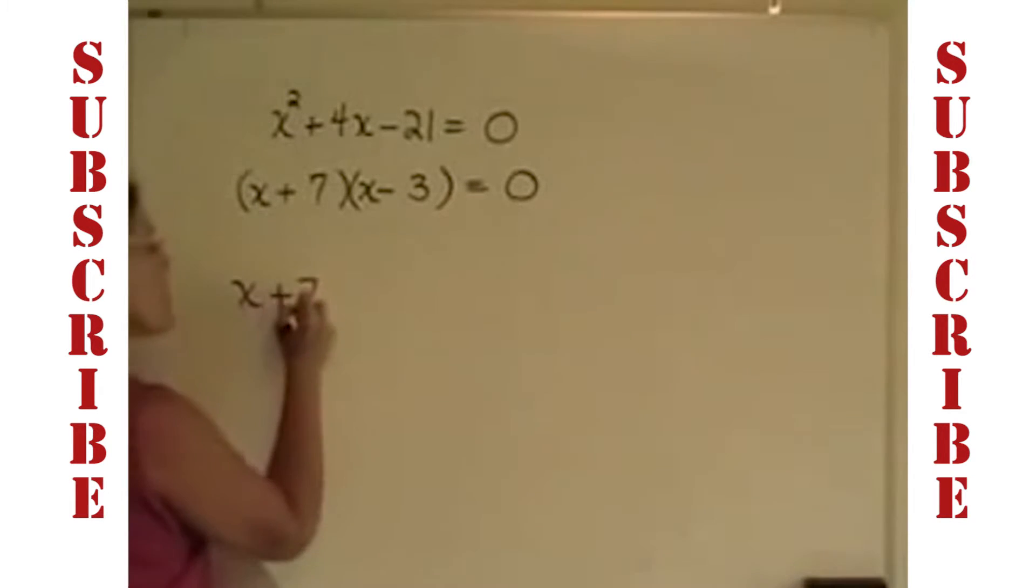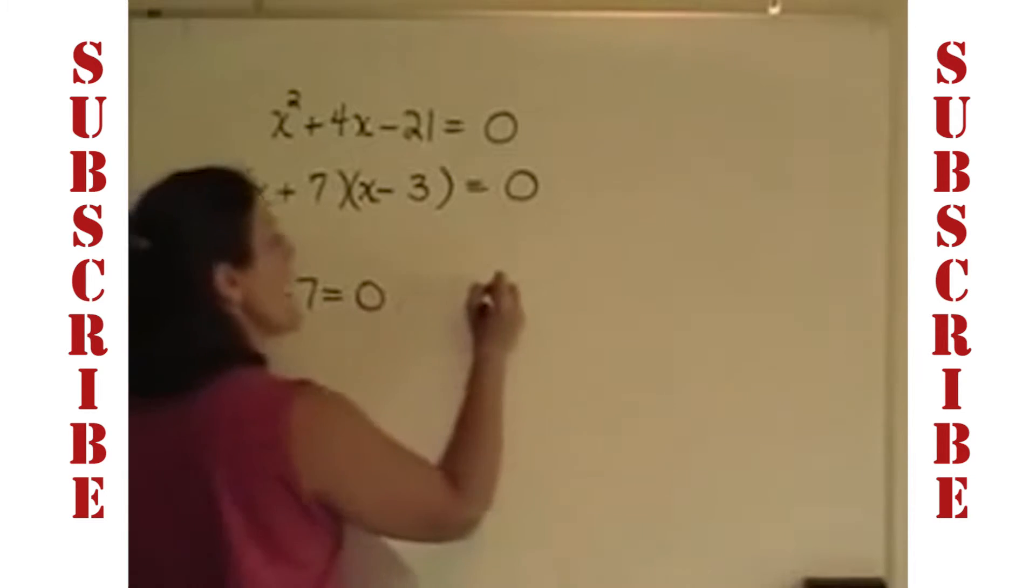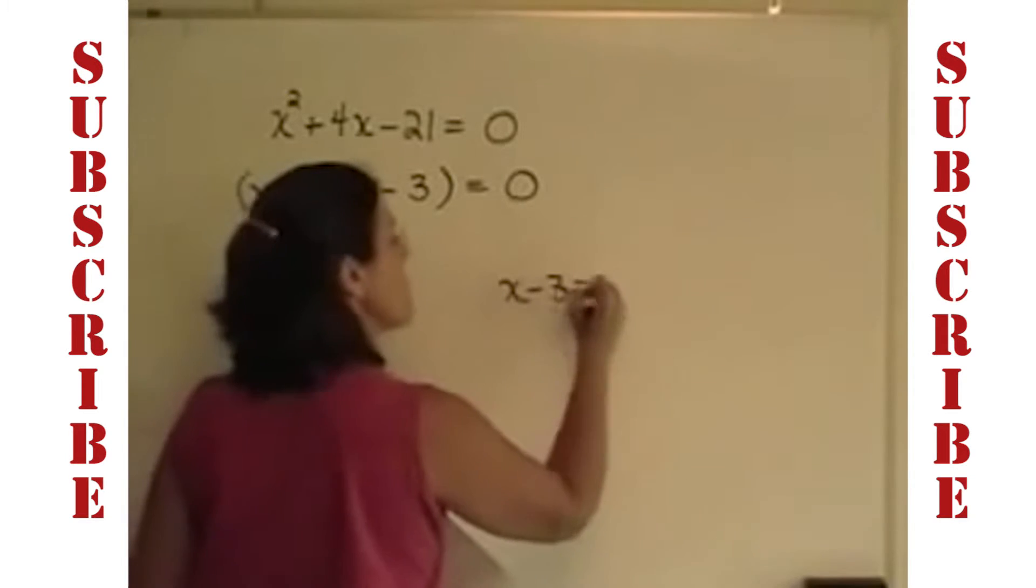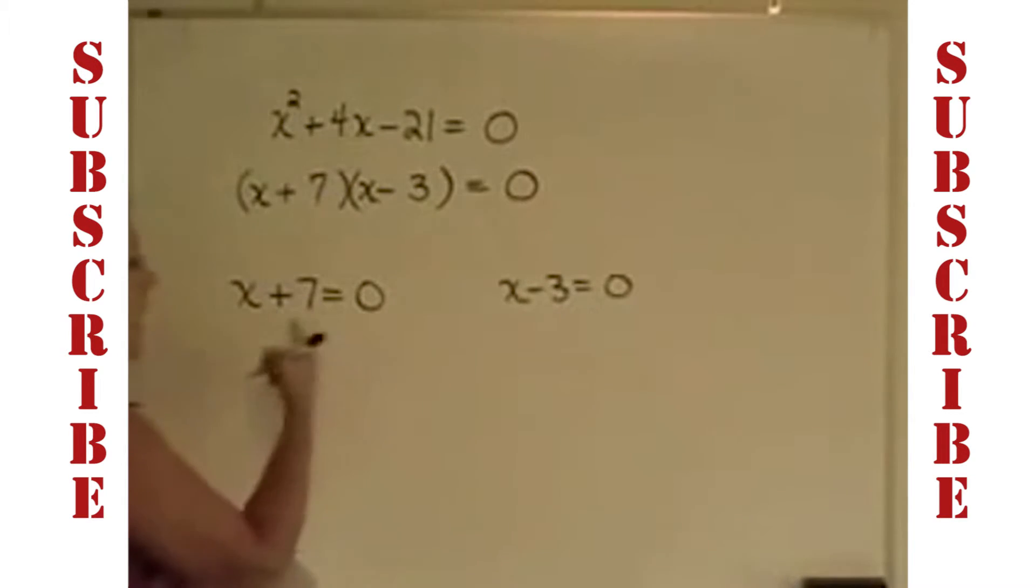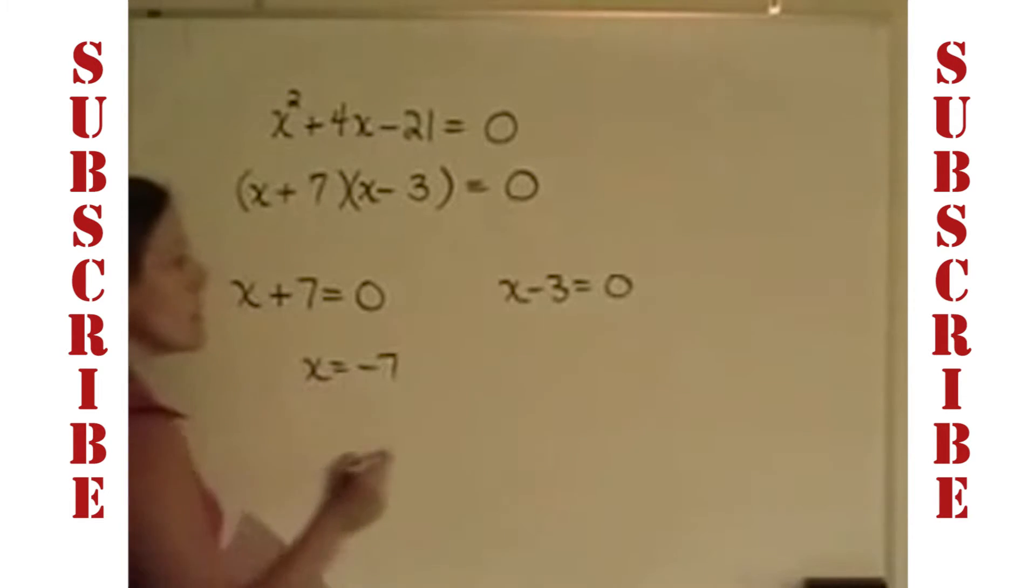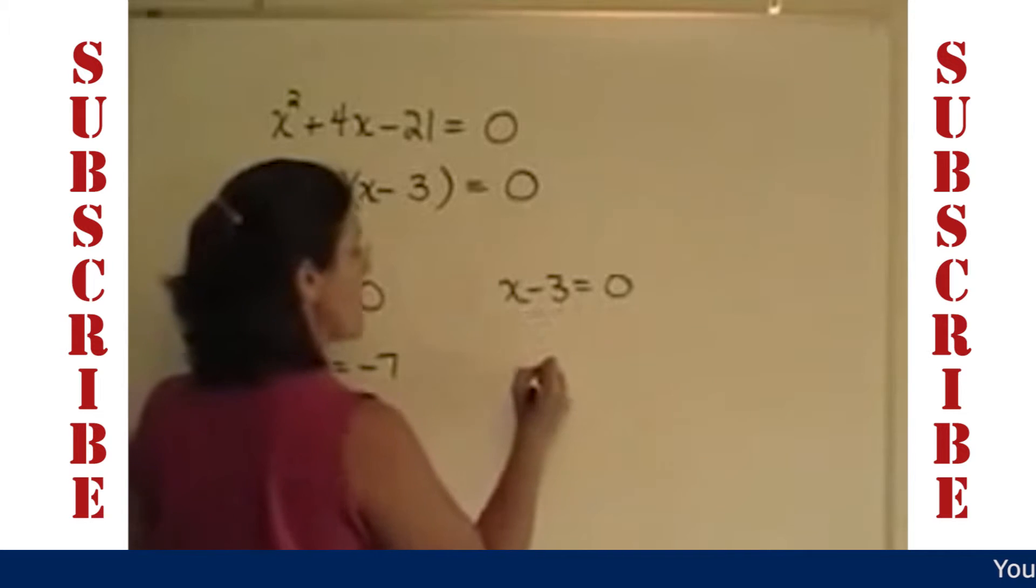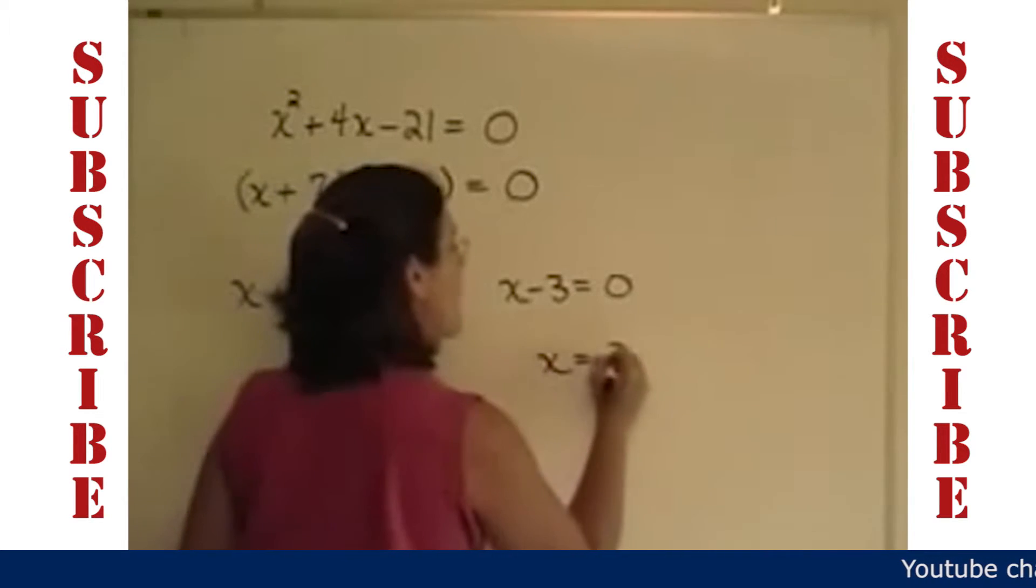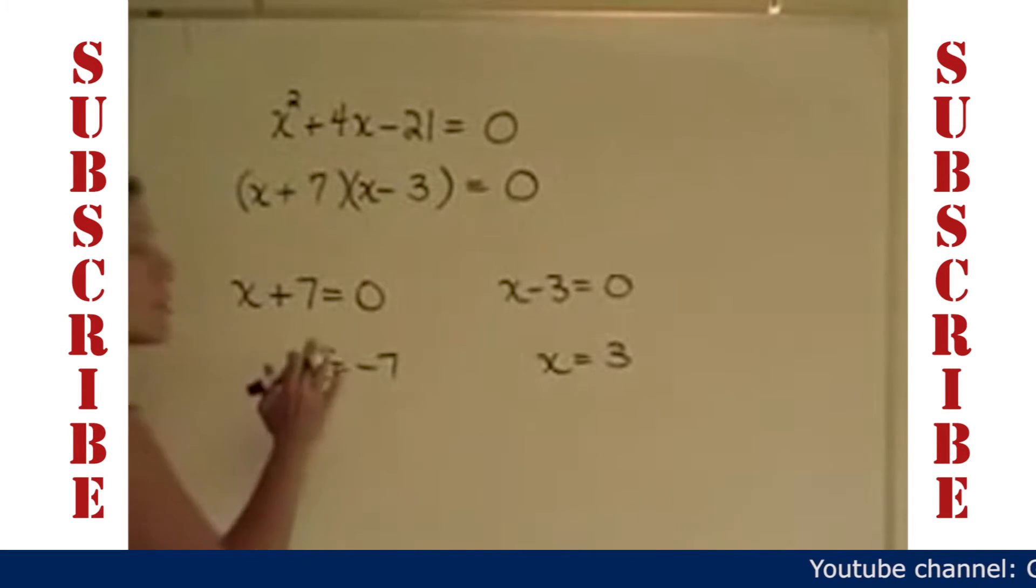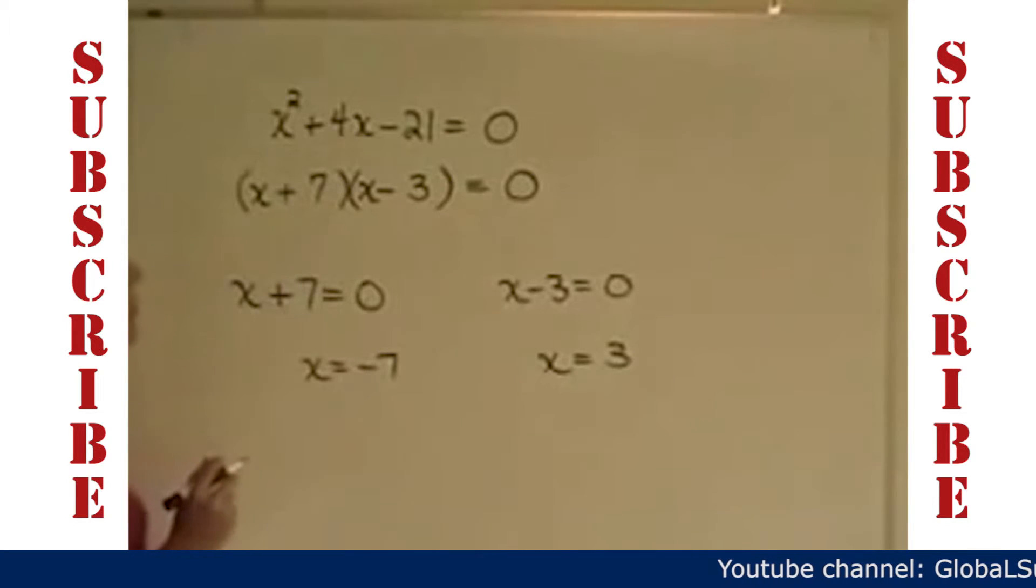In other words, I can state that x plus 7 has to equal 0, and x minus 3 has to equal 0. When I subtract 7 from both sides here, I'll get x equals negative 7, and when I add 3 to both sides to get x alone here, I'll get x equals a positive 3. Those are the two solutions that work into this equation.